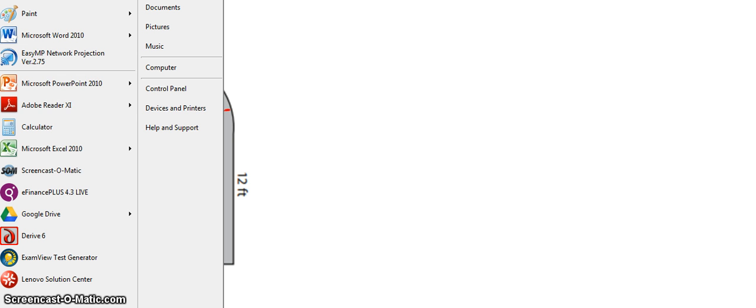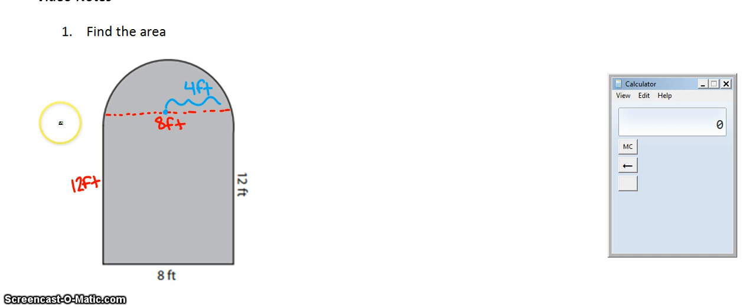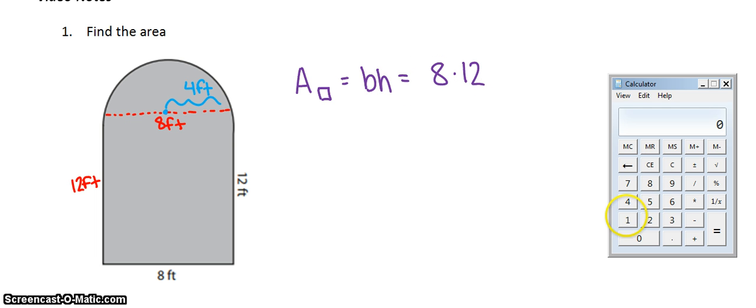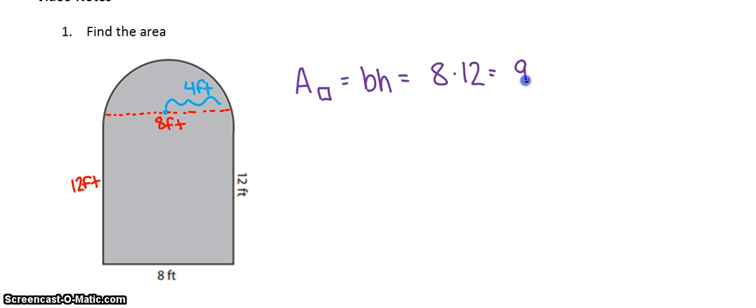Let's start with the rectangle because that is probably the more familiar shape here. The area of the rectangle is just base times height, which would be 8 times 12. If you don't know what 8 times 12 is, you can always get out your calculator. It's 96. But don't forget your units, I'll include them at the end.